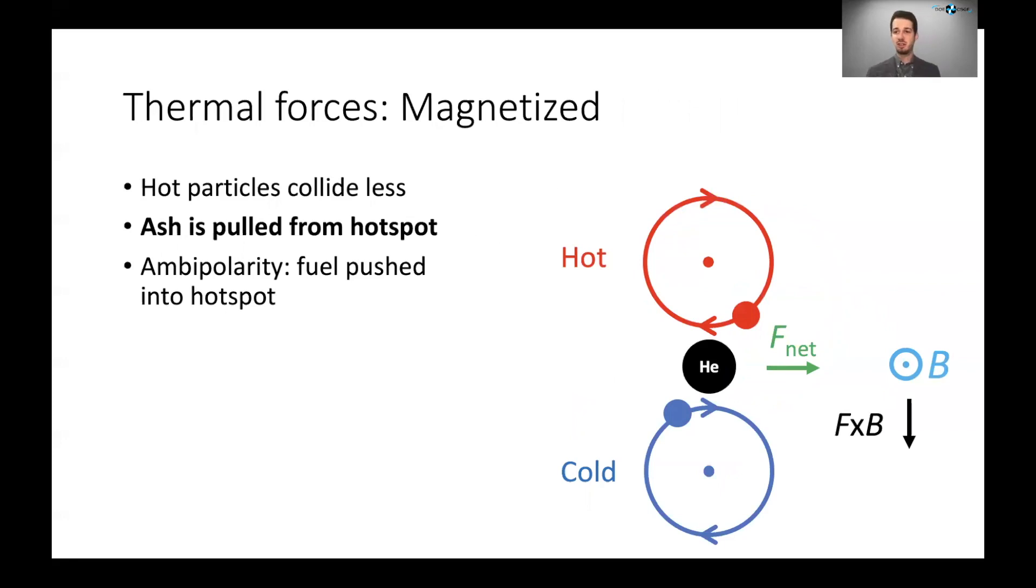So what does transport actually look like in the presence of these thermal gradients in a magnetized plasma now? Well, we still have hot particles colliding less and cold particles colliding more. So if we look at the forces on our helium ion, we see that these cold particles coming in from here will be providing the direction of the net force on the plasma. So the net force is off to the right. You cross that in and you find that the helium ash is now directed down into the cold region of the plasma in contrast to the case of unmagnetized transport. So once we magnetize this plasma, which we're already doing in magneto-inertial fusion, we suddenly find that ash is pushed out of the hot spot and that the fuel is pushed back into the hot spot, which is the desirable feature we wanted.